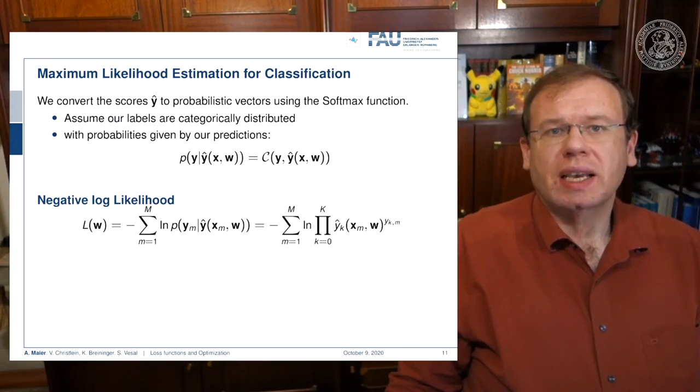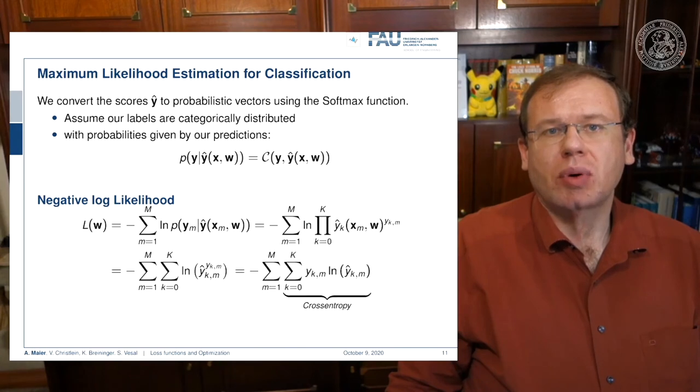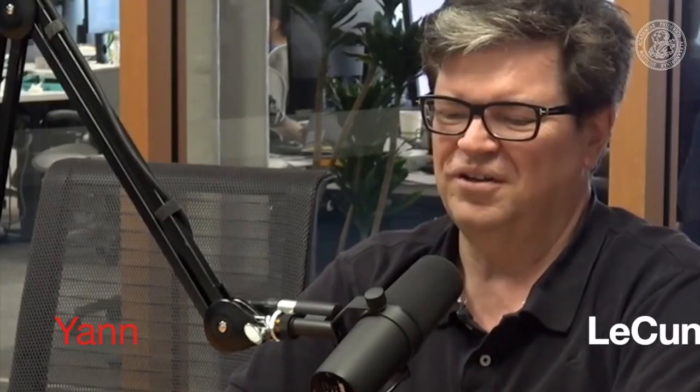Here we again apply the negative log likelihood. We plug in the definition of the categorical distribution, which is simply the product of all our Y subscript K hat to the power of the ground truth label. This can be further simplified because the product can be converted into a sum by moving in the logarithm. If we do so, you can see that the power of the ground truth label can be pulled in front of the logarithm. We see that we exactly end up with cross entropy. Now if you use the trick with the one-hot encoding again, you can see that we exactly end up with the cross entropy loss where we have the sum over the entire set of observations times the logarithm of the output at exactly the position where our ground truth label was 1. Hence we neglect all the other terms in the sum of the classes.